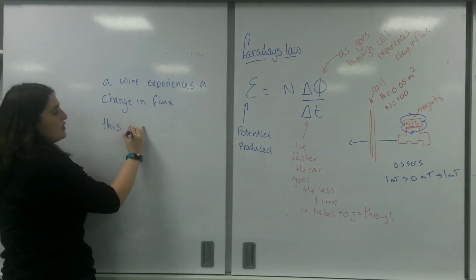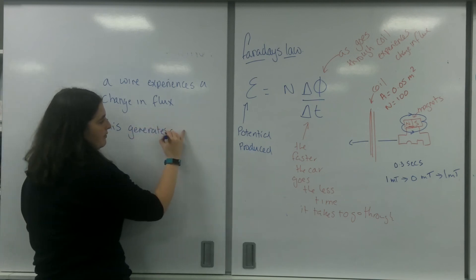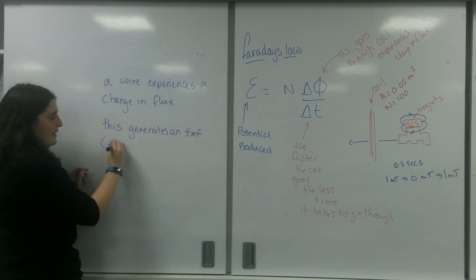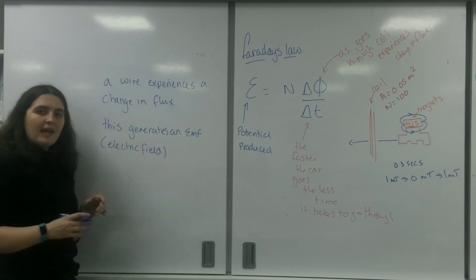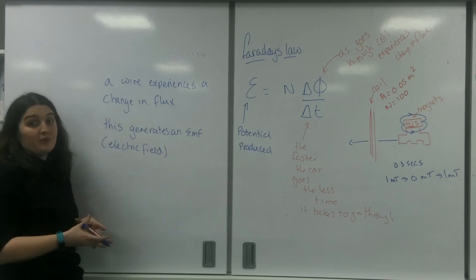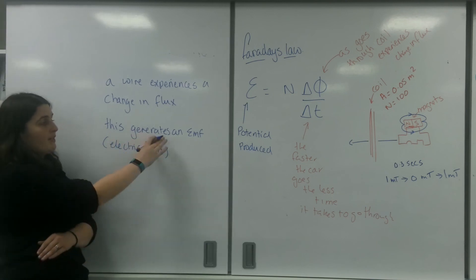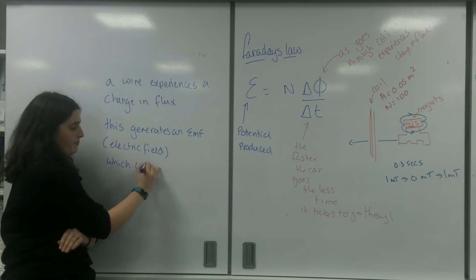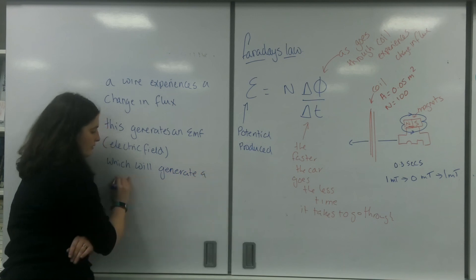This generates an EMF, or if you would like to say, an electric field. If there is a potential difference, electrons would flow. This generates an EMF, which will generate a current.